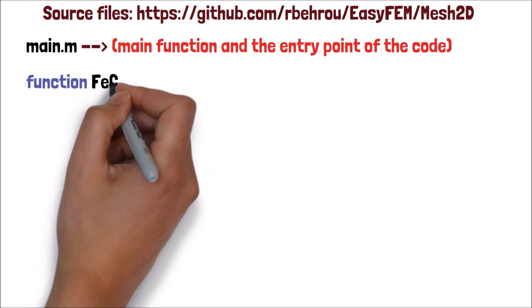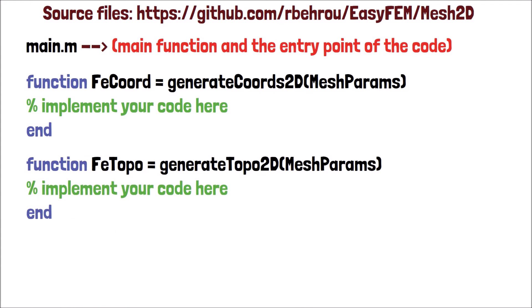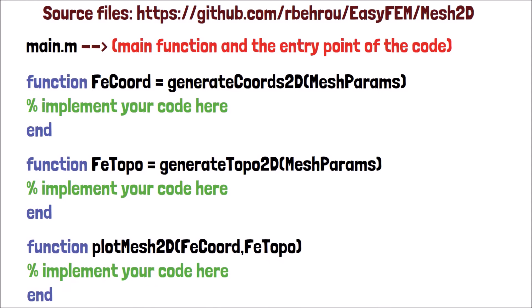Next, we will implement a function called generateCoords2d.m to generate nodal coordinates. Then, the generateTOPO2d.m function will be used to create the connectivity matrix, as I explained schematically. Finally, for visualization of mesh, we will use the plotMesh2d.m function.